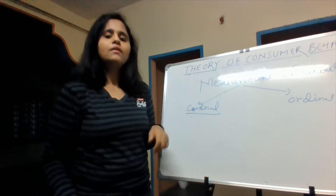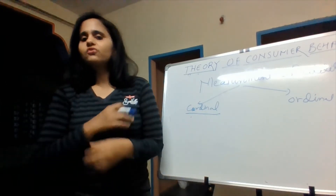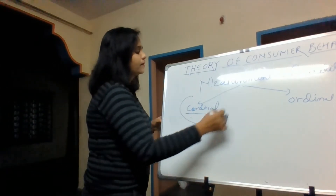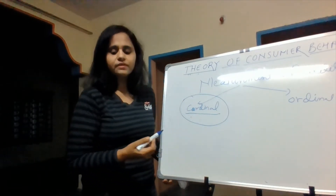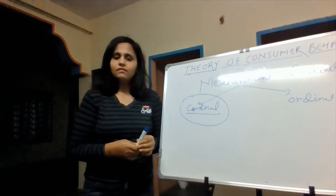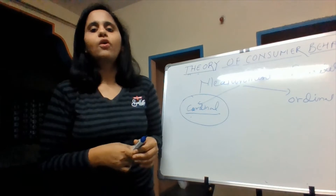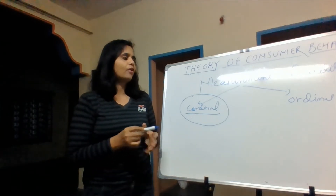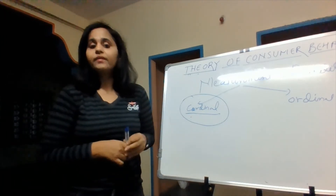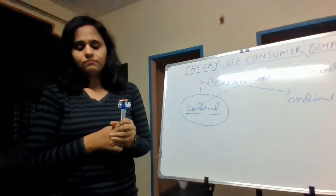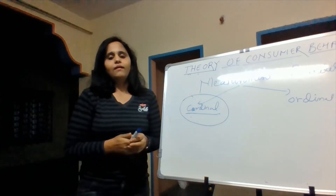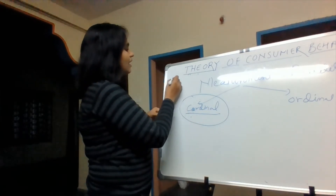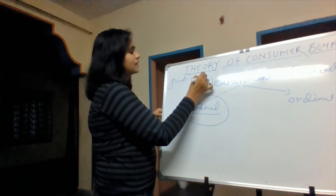If we talk about the assumptions of the cardinal approach — since economics is a study based on different assumptions, you cannot derive an economic formula unless you assume. So you have to make assumptions in the cardinal approach because you are trying to quantify utility. The first assumption is that the consumer should be rational — if the consumer is irrational, you cannot predict their behaviour and cannot theorize anything. The second assumption is that utility always depends on quantity. The third assumption is that goods are good — the more a consumer consumes, the more utility is obtained.